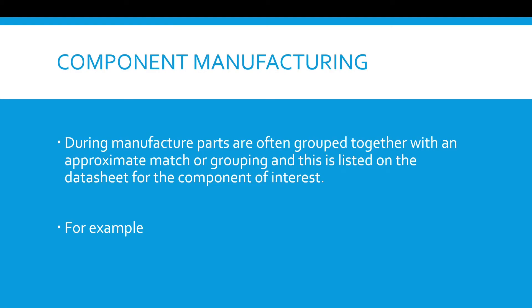During component manufacture, parts are often grouped together with an approximate match or grouping, and this is listed on the datasheet for the component of interest.